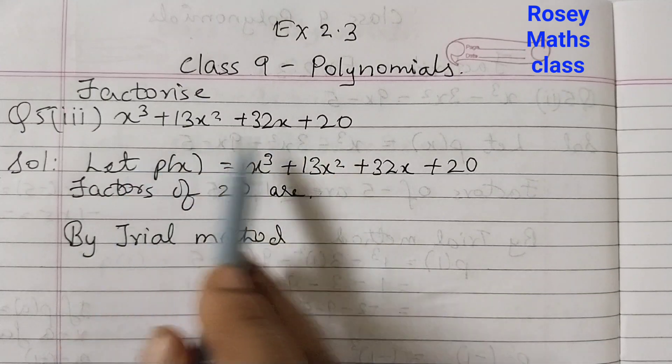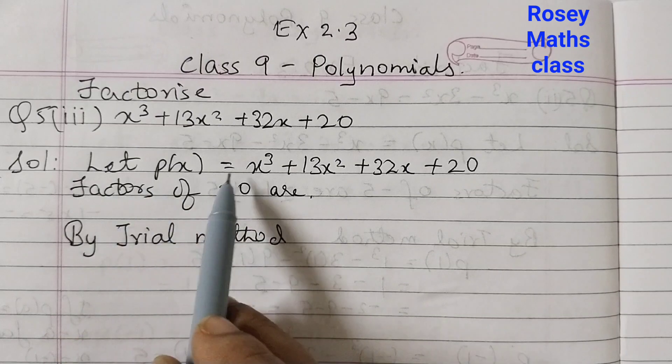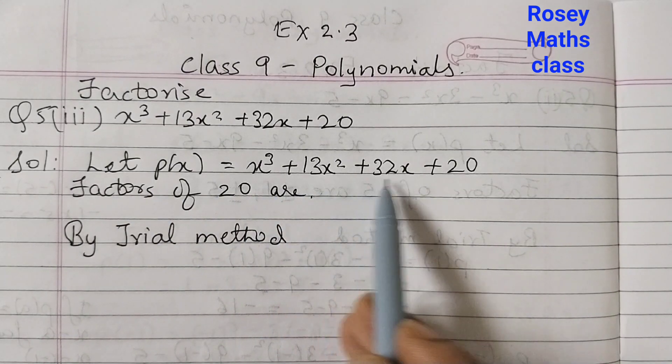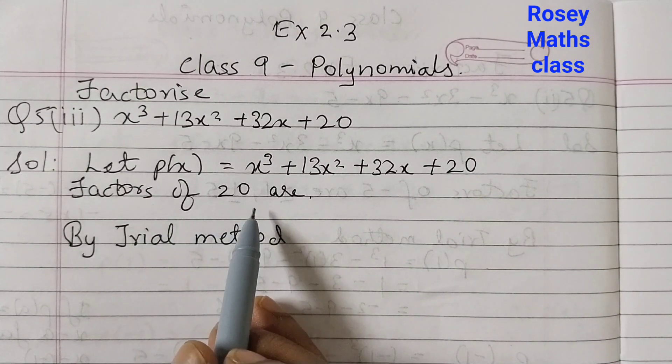This is the given polynomial which is a cubic polynomial because the highest degree is 3. So let p(x) = x³ + 13x² + 32x + 20. This is the constant term, so we will find the factors of 20.